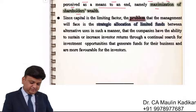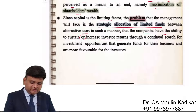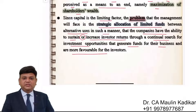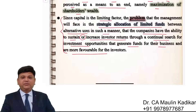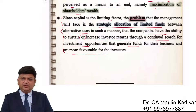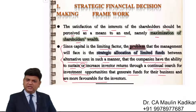Since capital is a limiting factor, the problem that management will face is the strategic allocation of limited funds between alternative uses, in such a manner that the company has the ability to sustain or increase investors' returns through continual search for investment opportunities. In short, we should make investment in proposals which have positive NPV. And if there are multiple proposals with positive NPV but limited funds, then the decision is made using capital rationing - that's it.